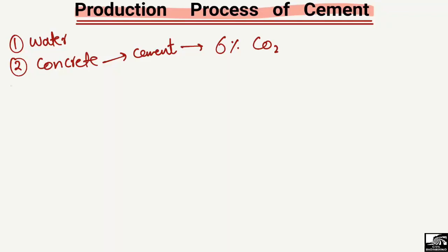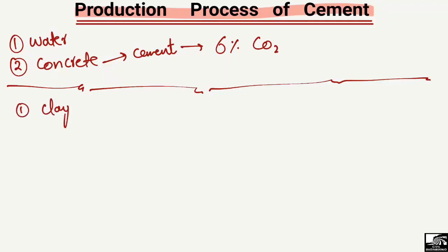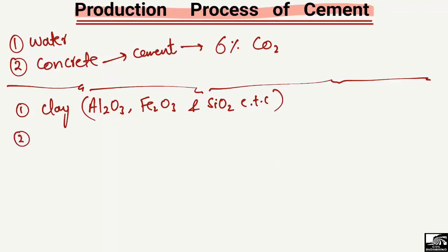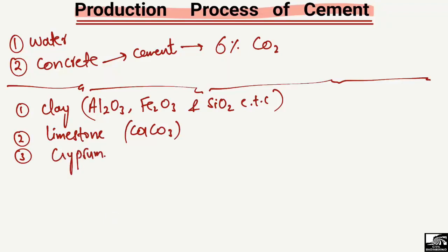Cement is basically composed of three main components. The first is clay — clay contains different oxides like aluminum oxide, iron oxide, silicon oxides, and others. The second component is limestone, which is basically calcium carbonate. The third component in the production of cement is gypsum. So these are the three main components used in the production of cement.